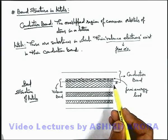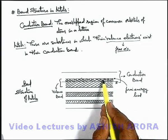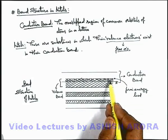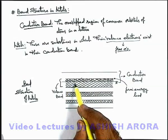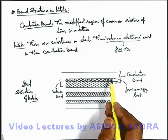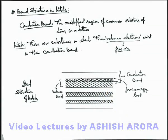So this substance will behave like a good conductor of electricity because it has plenty of free electrons in the conduction band. Those substances which have more free electrons in the conduction band, or where the overlapping of the conduction band with the valence band is greater, are better conductors of electricity. This is how we understand the band structure of metals.